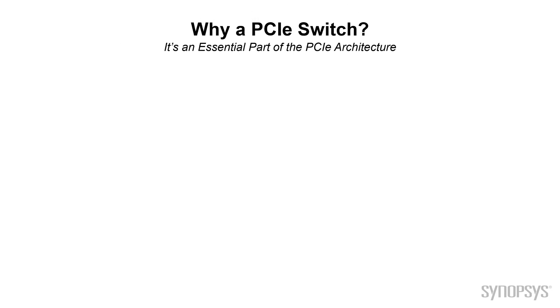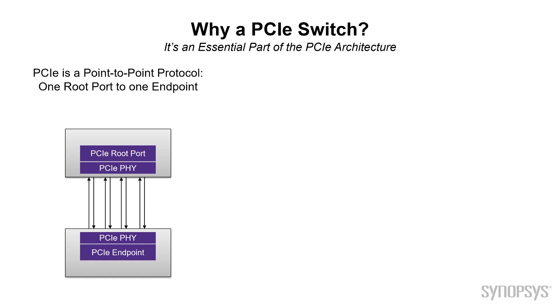The first question is: why a PCI Express switch in the first place? It's an important and essential part of the PCI Express architecture. PCI Express is essentially a point-to-point protocol. There's one root port, sometimes referred to as root complex, that talks to one endpoint. And as you can see from this diagram, that's pretty limiting. If that's all there was for PCI Express, it would not be the pervasive architecture that it is today.